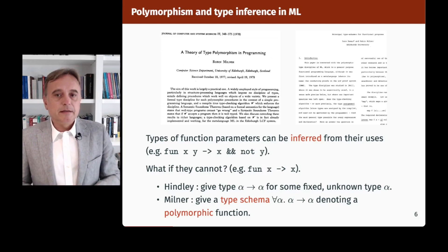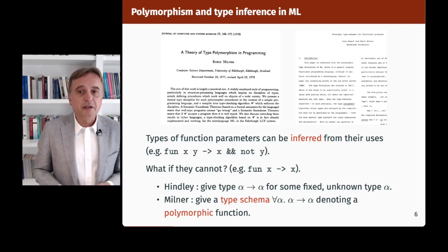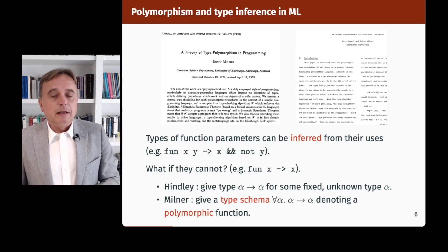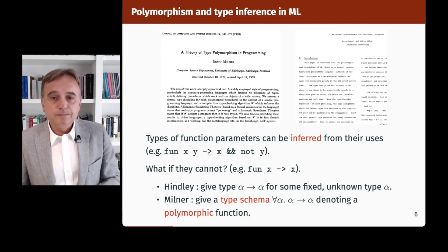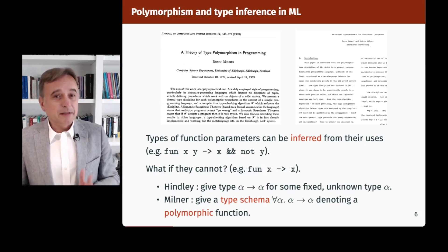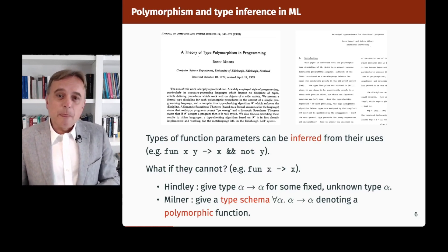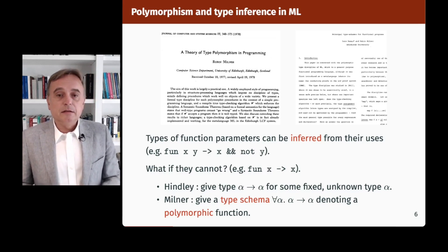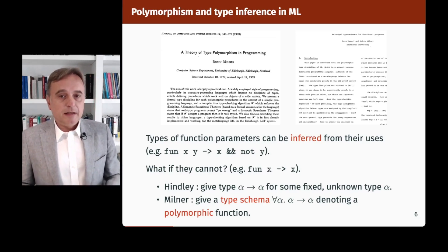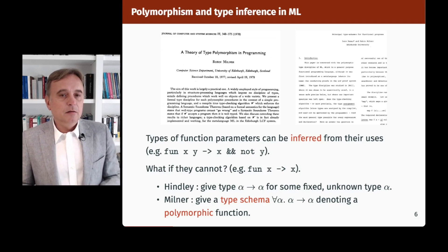Milner also wanted types to not get in the way — users should write programs pretty much like they would in Lisp, without type annotations. So he studied type inference and noticed that the types of function parameters can be inferred from their uses. But what if the type of a parameter cannot be inferred, as in 'fun x -> x', where the use of x doesn't tell us anything? Earlier work by Hindley for the simply-typed lambda calculus would give it type 'alpha -> alpha' for some fixed unknown type alpha. Milner noticed this identity function could be given a type schema 'for all alpha, alpha -> alpha', denoting a polymorphic function usable at several different types.